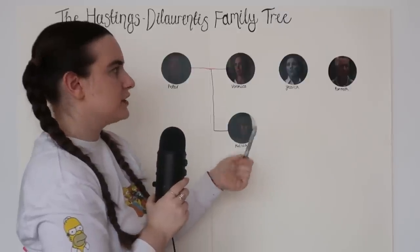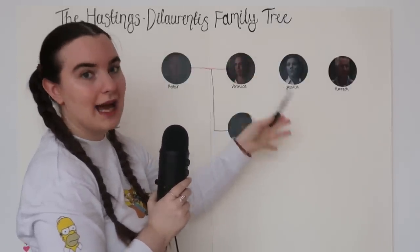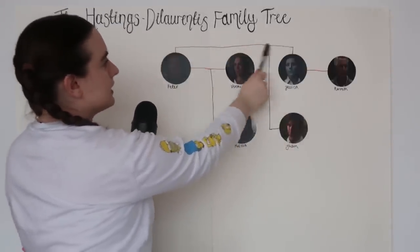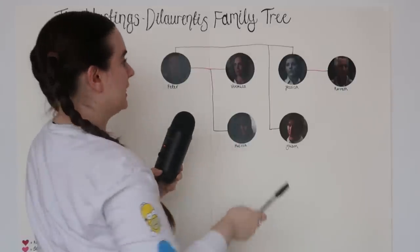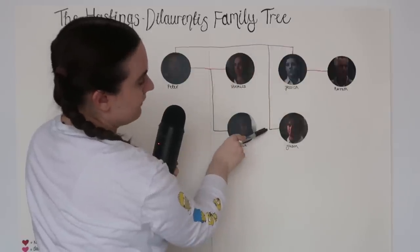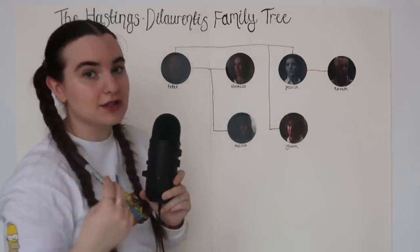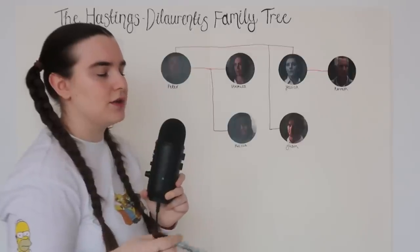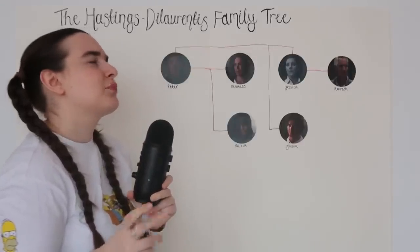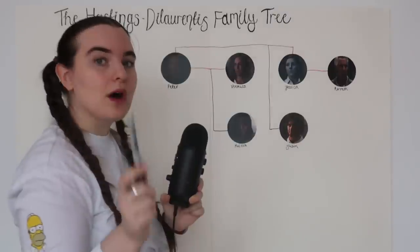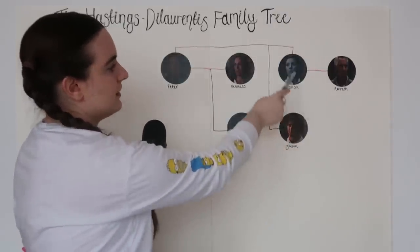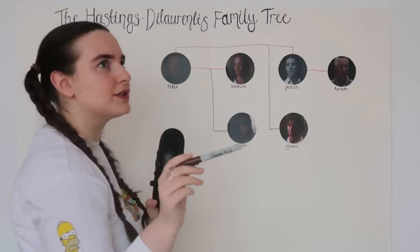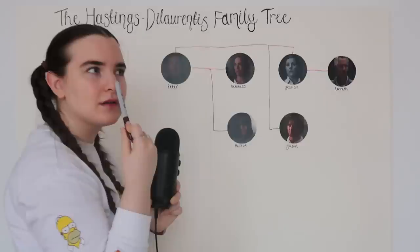Jessica and Kenneth do get a pink line because at one point they were married. Peter and Jessica get a red line because they had their little affair on the side, and the result of that affair was having a child — Jason. Kenneth does not know that Jason is not his until quite a bit down the line. I think we find out that Jason's related to the Hastings in like season three, maybe season two.